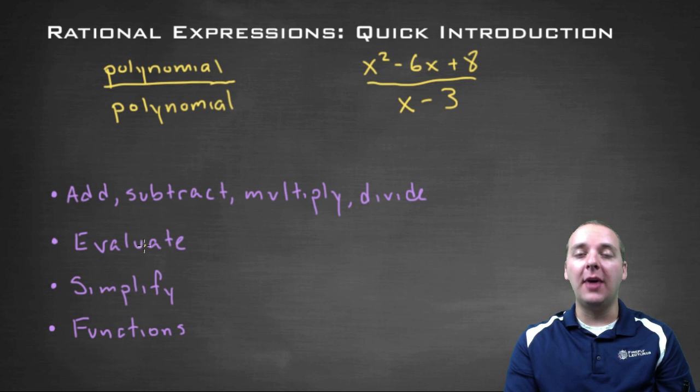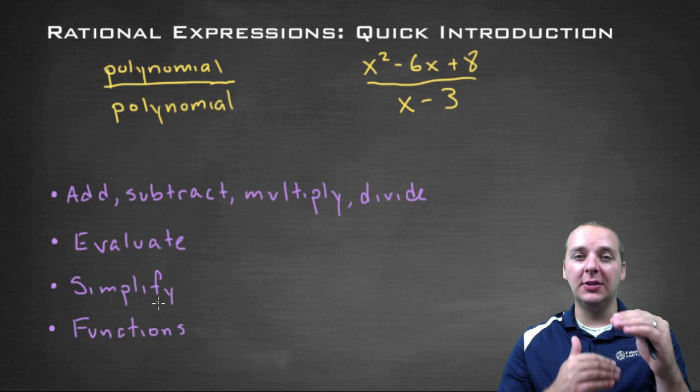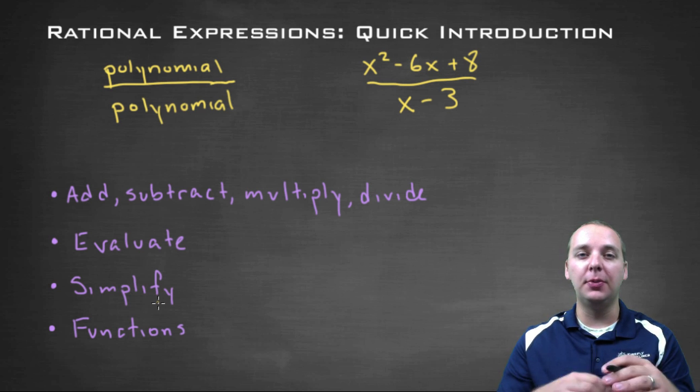We're going to talk about how to evaluate these guys at certain x values, how to simplify them. You know, if you have a big polynomial over a big polynomial and that fraction is gigantic, is there any way of simplifying that down?